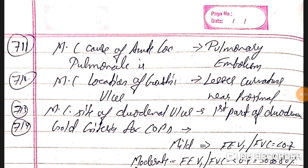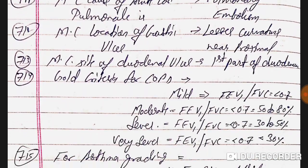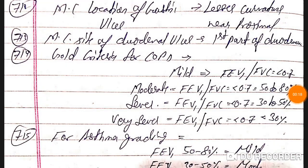Good evening doctors, welcome again. Today we are going to discuss NEET PG 2020 important one-liners — this is part 72. Most common cause of acute cor pulmonale is pulmonary embolism.